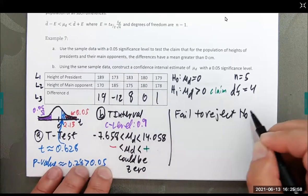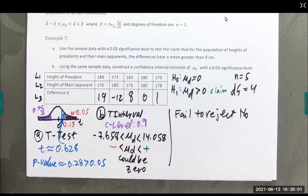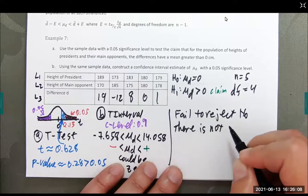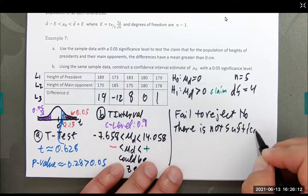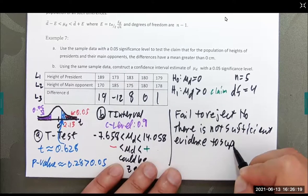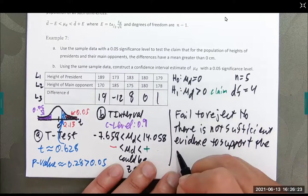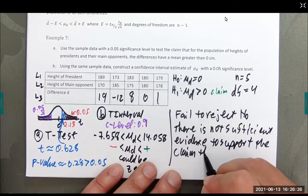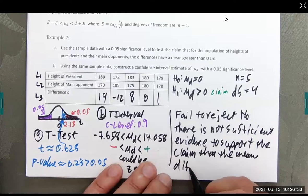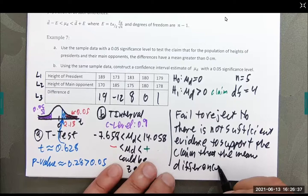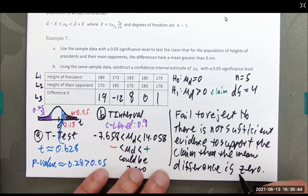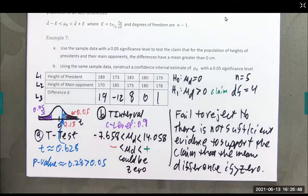So, both tests are telling us fail to reject the null hypothesis. There is not sufficient evidence to support the claim that mu sub D is greater than 0. And that's dependent samples.